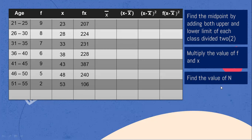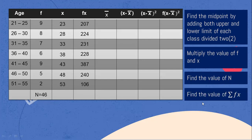Next, find the value of N by simply adding all the values in the frequency column: 9 plus 8 plus 7 plus 6 plus 9 plus 5 plus 2, which equals 46. Then find the summation of F times X: 207 plus 224 plus 231 plus 228 plus 387 plus 240 plus 106. The summation of F times X is 1,623.